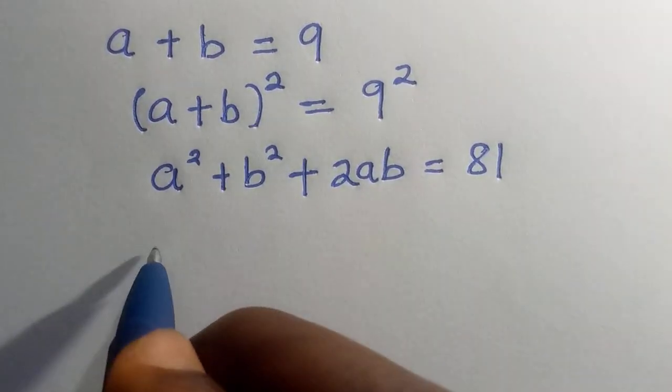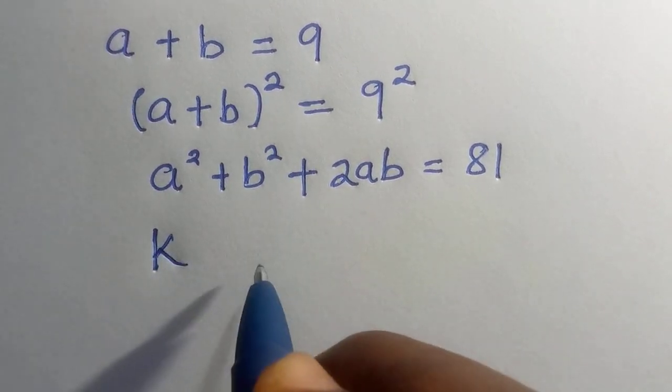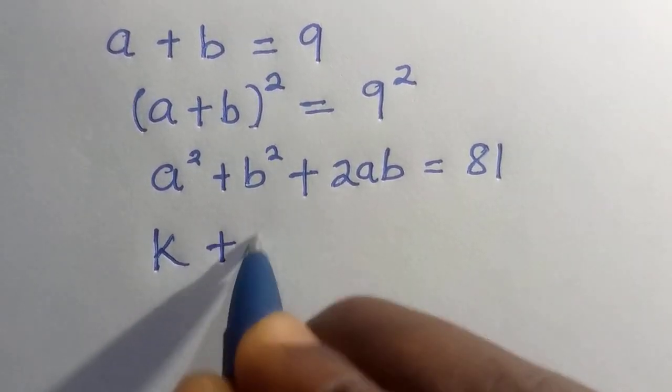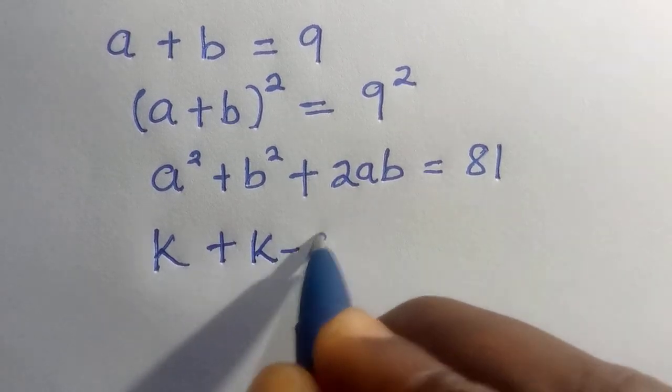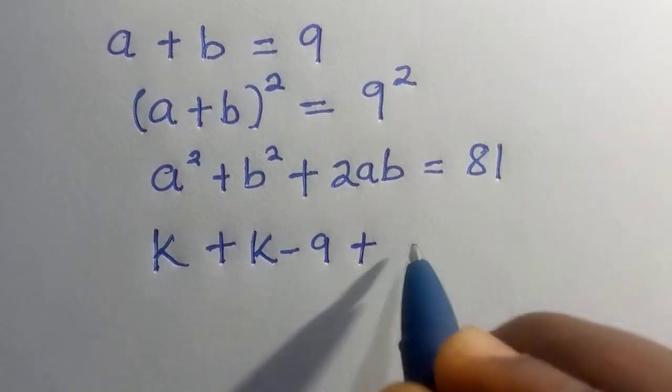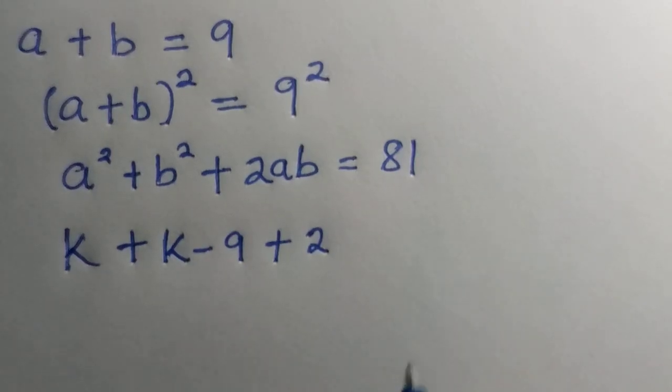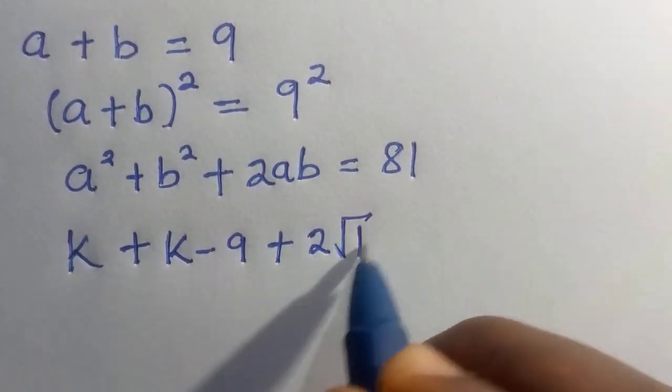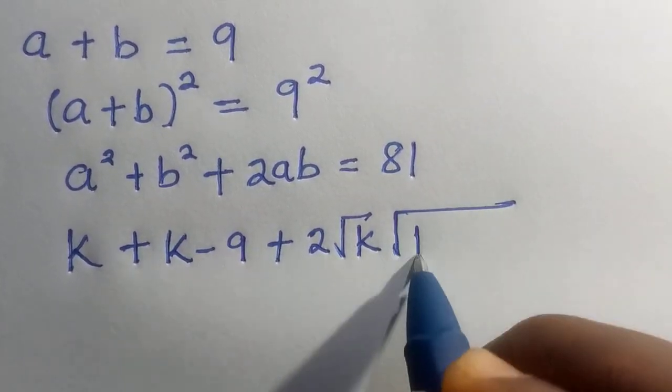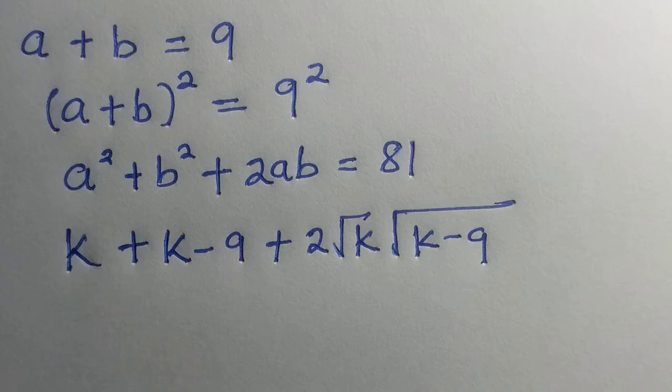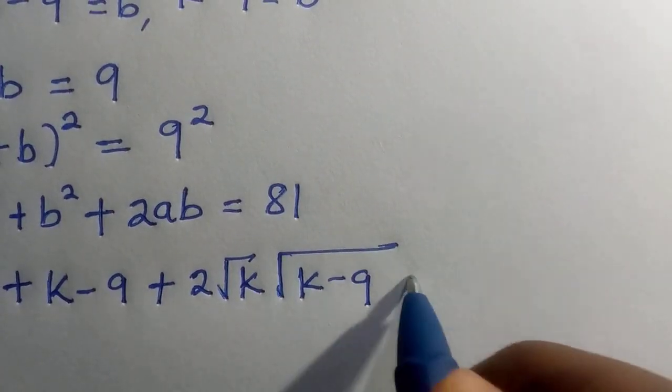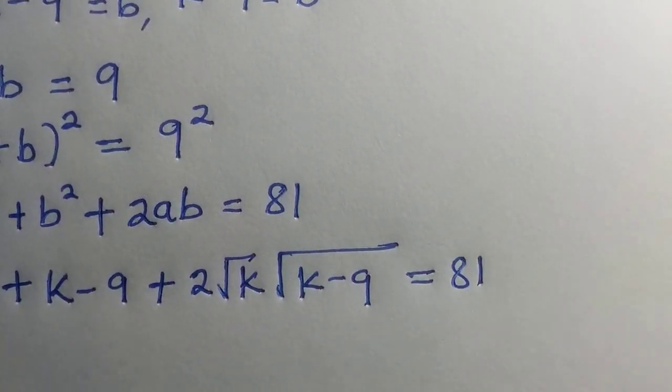Let's try to replace them. Here we have k plus k minus 9 plus 2. Then we have a as square root of k and we have b as square root of k minus 9 equals 81.